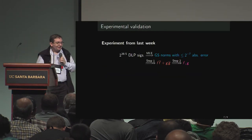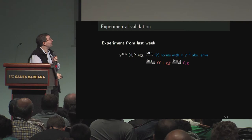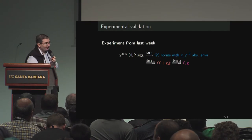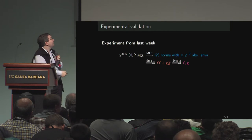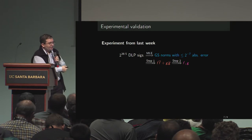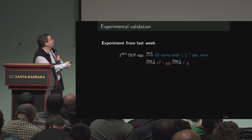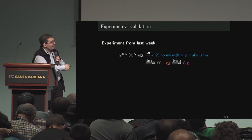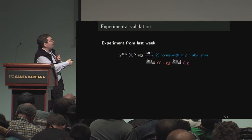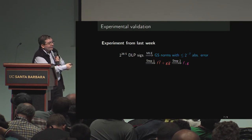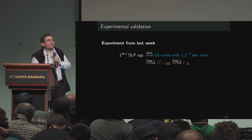We ran the attack last week. We generated something like 2^38.5 DLP signatures, and from that you easily extract approximations of the GS norms up to an error of about 2^{-7}. Step 1 gives you the GS polynomial, and step 2 gives you the secret key.